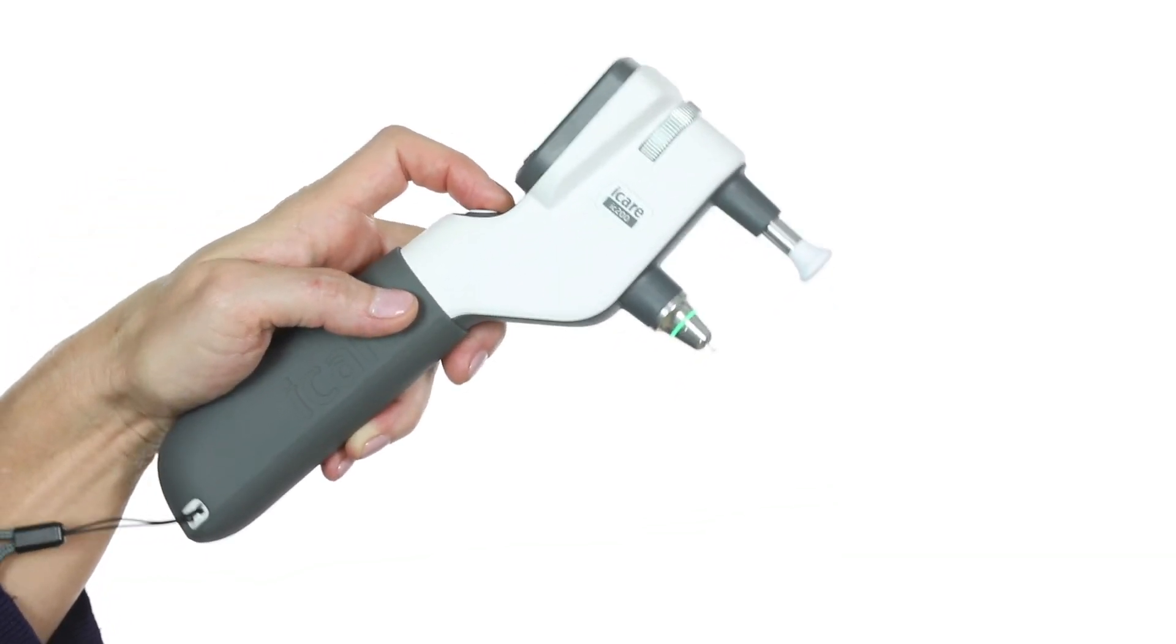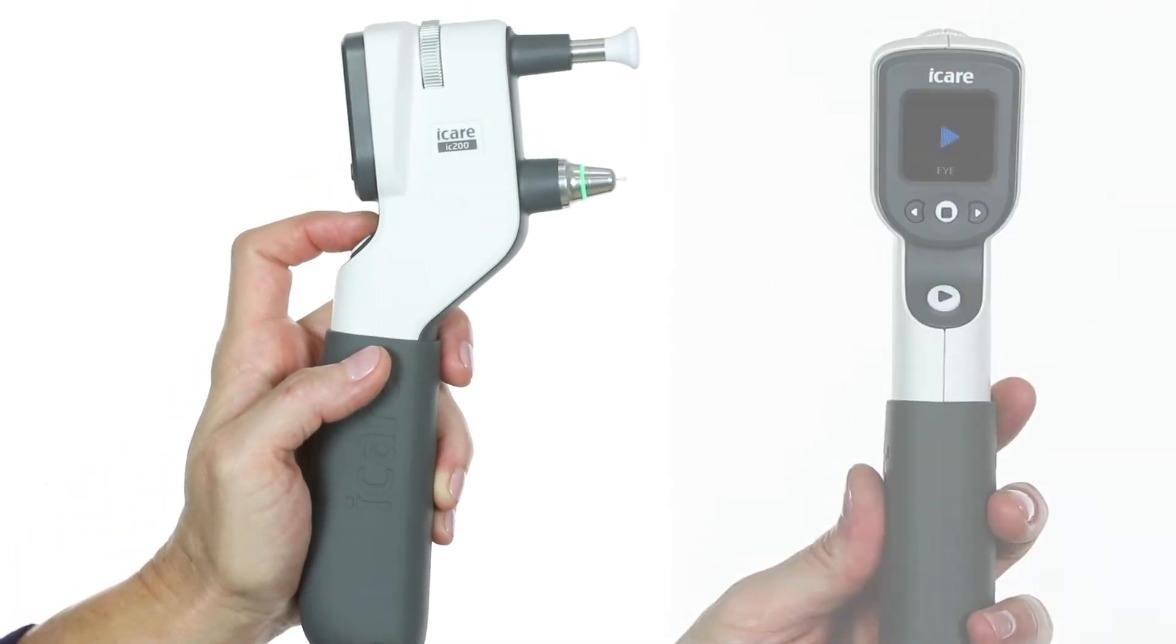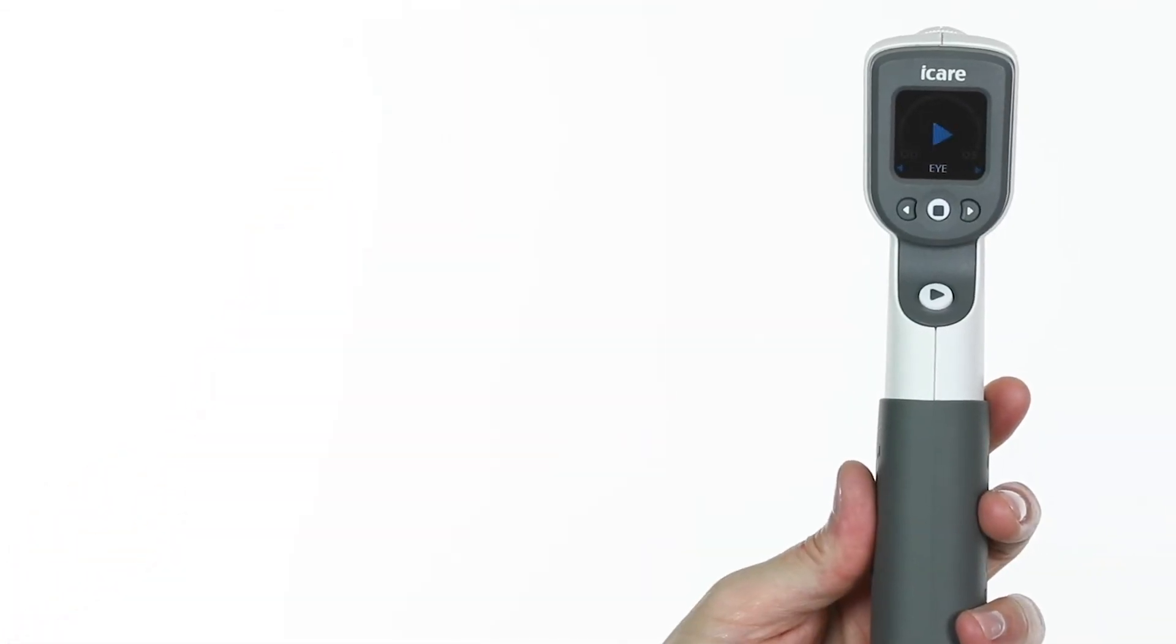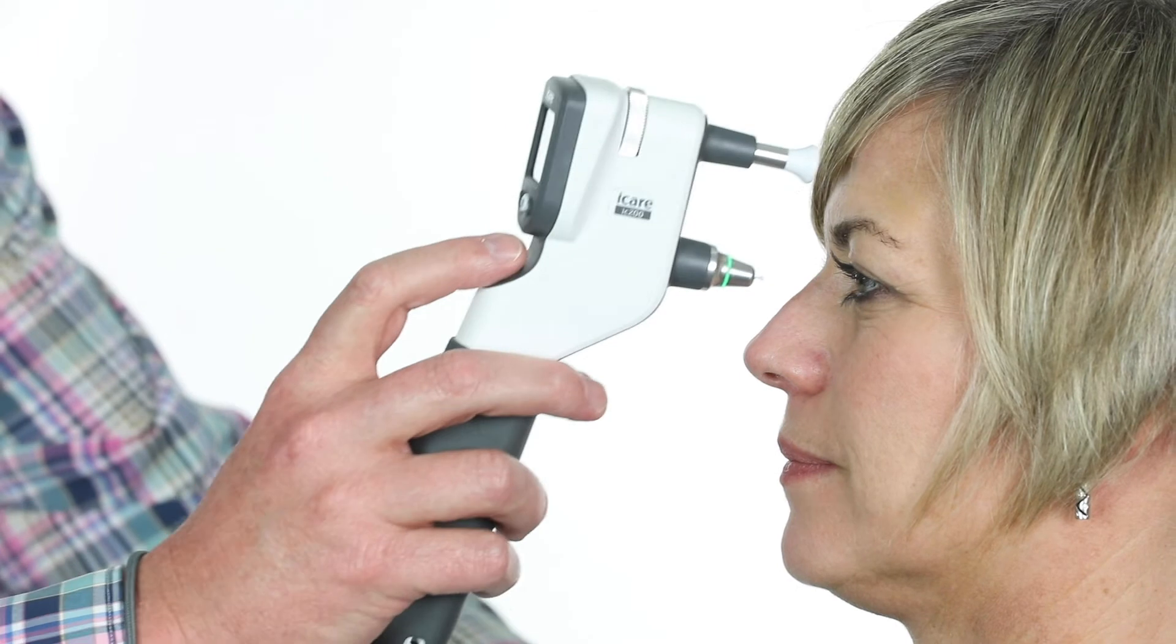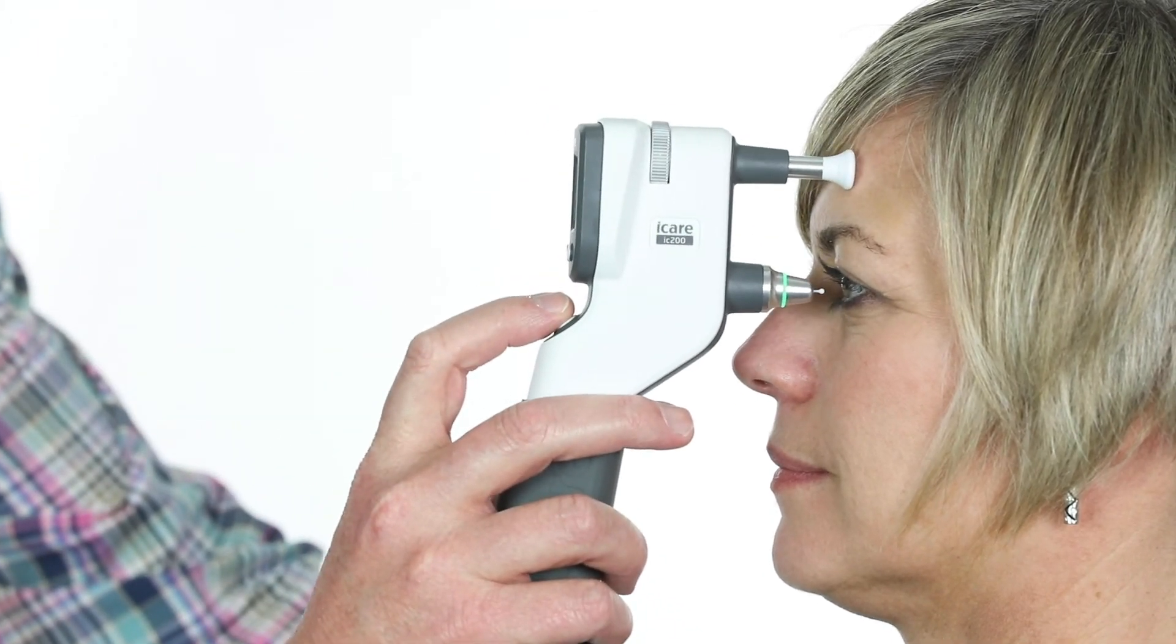The tonometer is ready to take a measurement when the blue play symbol appears. Place the forehead support on the patient's forehead. Aim the probe in the center of eye about 5 millimeters away and perpendicular to the cornea.